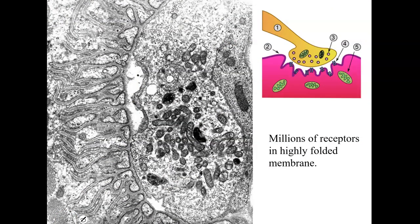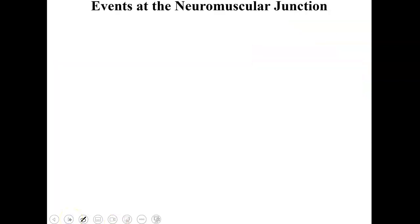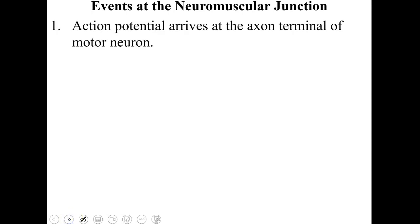Looking here at a close-up view, you can see that you have millions of receptors found along the cell. You can see all of this invagination through here, which simply increases the surface area for the neurotransmitters to come across. Moving on, here are the steps of what's actually happening at the neuromuscular junction, typed out so you can see it step by step.